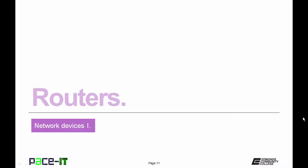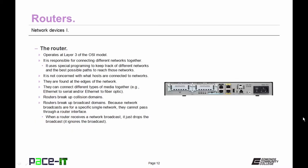Now let's move on to our discussion about routers. The router operates at layer 3 of the OSI model, the network layer. It is responsible for connecting different networks together. It uses special programming to keep track of different networks and the best possible paths to reach those networks. It's not concerned with what hosts are connected to those networks — routers only care about individual networks. Routers are found at the edge of the network, since they are only concerned about finding networks.